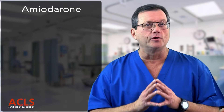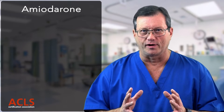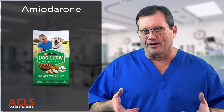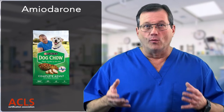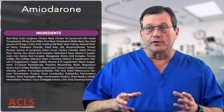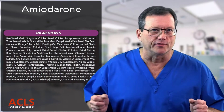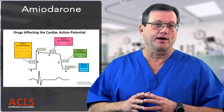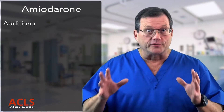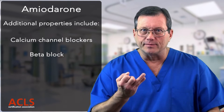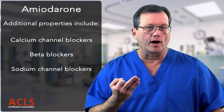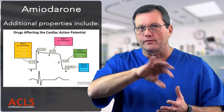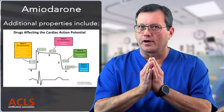As it pertains to amiodarone, it's a complex drug. When I think about amiodarone and its classification, it reminds me of a bag of dog food — whatever ingredient is most abundant appears first on the label, but there's still other stuff in there. Same with amiodarone: it's classified as a Class 3 potassium channel inhibitor, but it also has calcium channel blocker properties, beta blocker properties, and sodium channel blocker properties. It really impacts all areas of the cardiac cell action potential, making it a very complex drug.